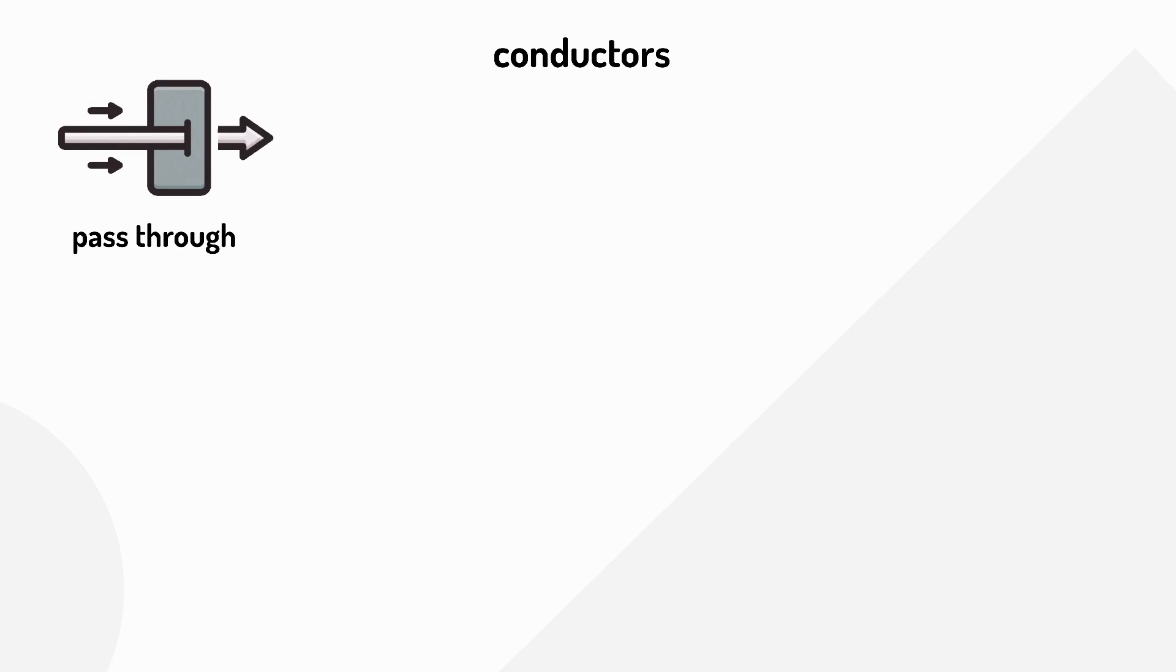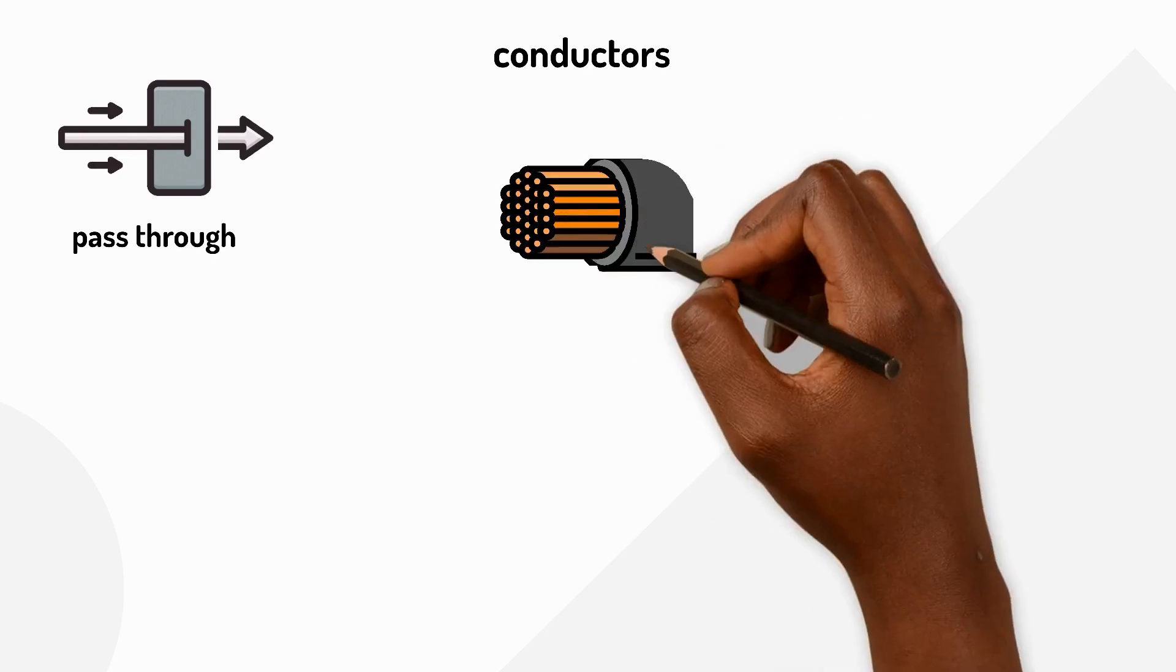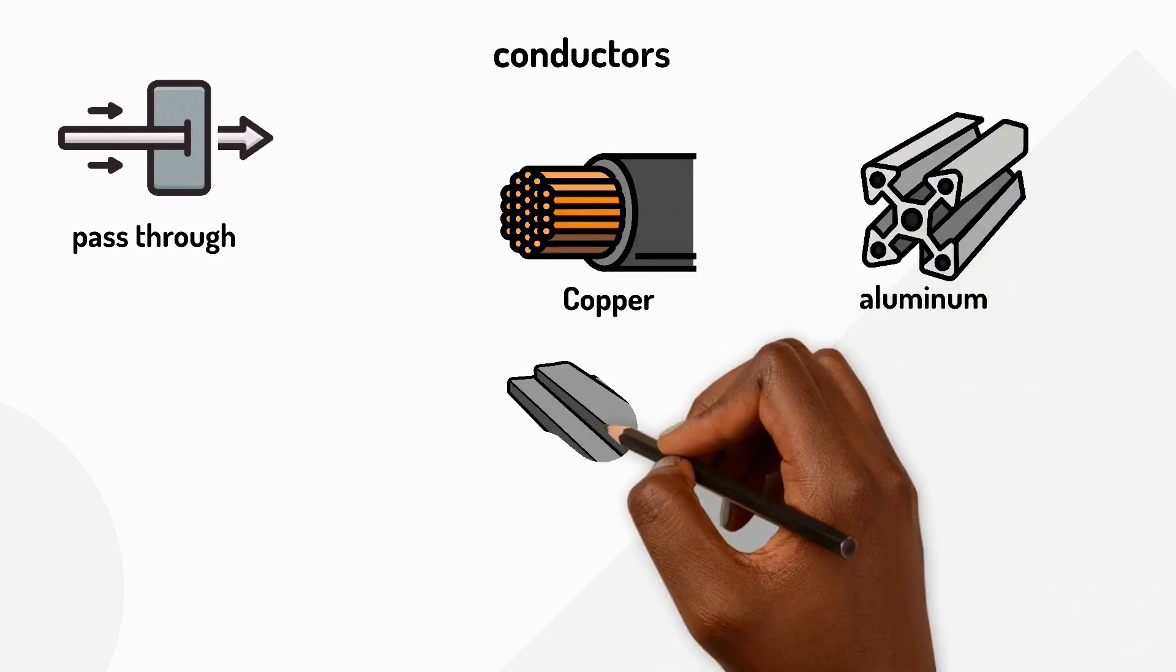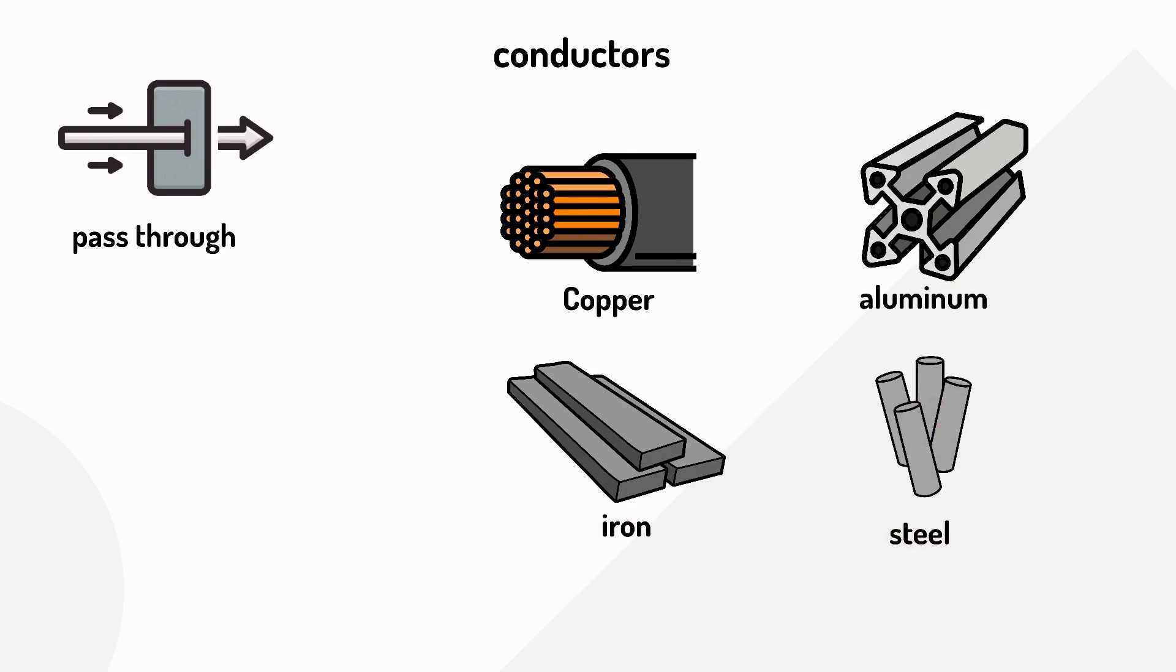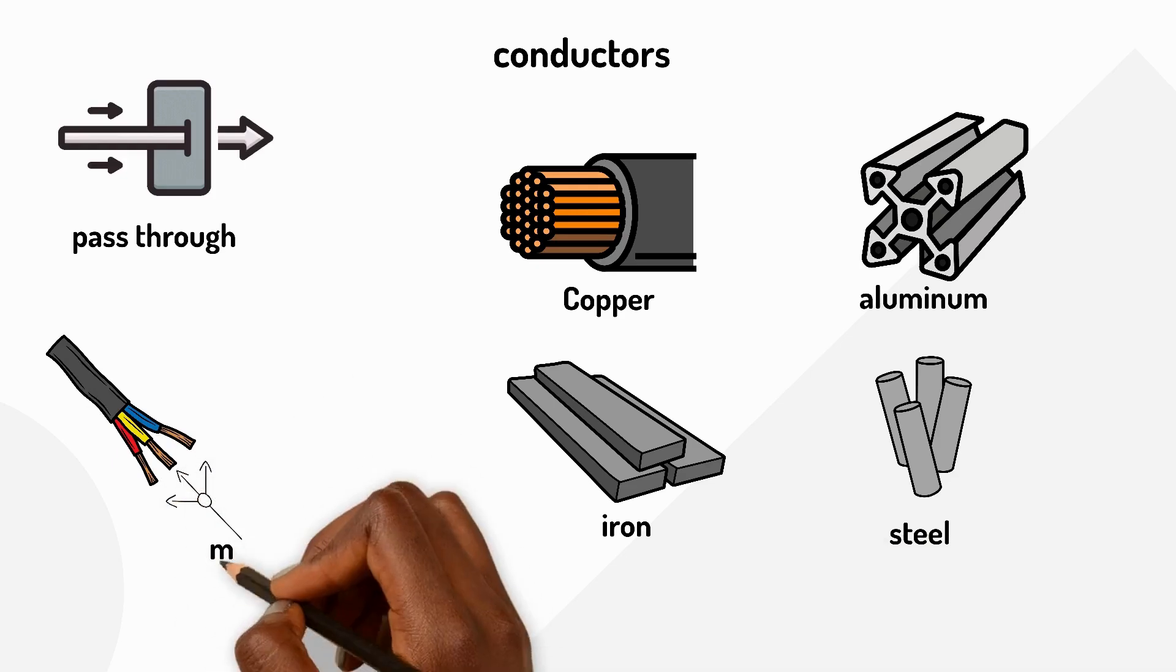Most metals are excellent conductors. Copper, aluminum, iron, and steel all let electricity flow through them easily. That's why the wires inside cables are made of metal.